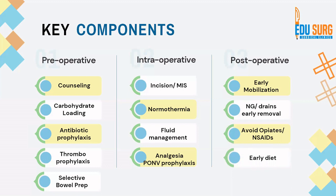Just as fasting is reduced preoperatively, it should also be minimized postoperatively — start diet as early as possible. Even for gastric surgery, orals are started on day 2 or 3. Mounting evidence from ERAS guidelines shows that early feeding is beneficial in reducing postoperative complications and length of stay. Start liquids by day 2 or 3 if not on the same day, depending on complexity of surgery, presence of gut anastomosis, and risk of leaks.